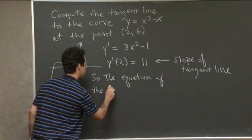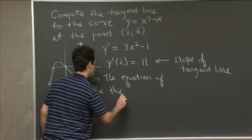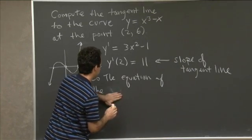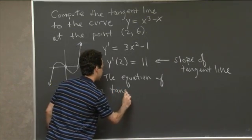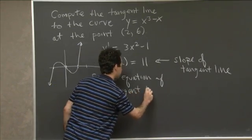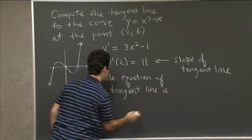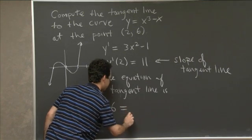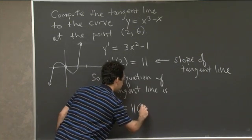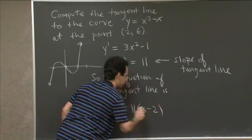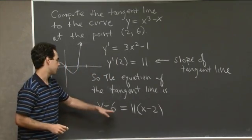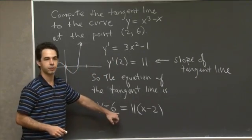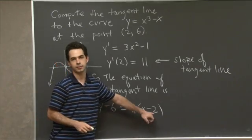The equation of the tangent line is y - 6 = 11(x - 2). That's y - y₀ = m(x - x₀).